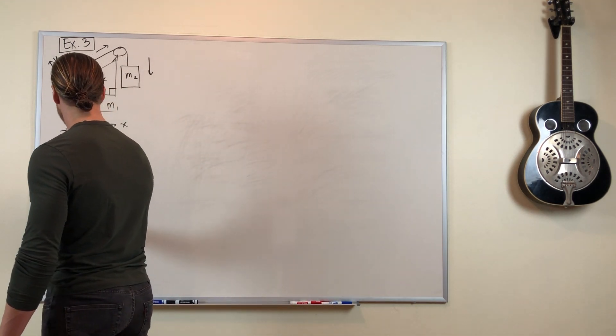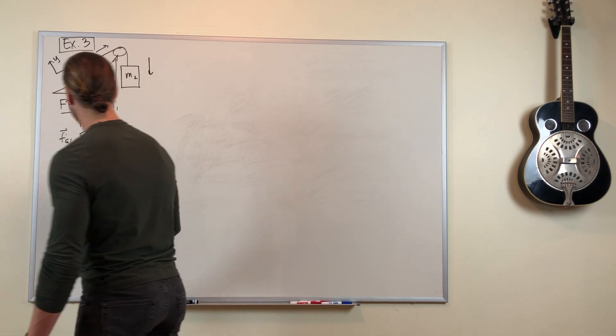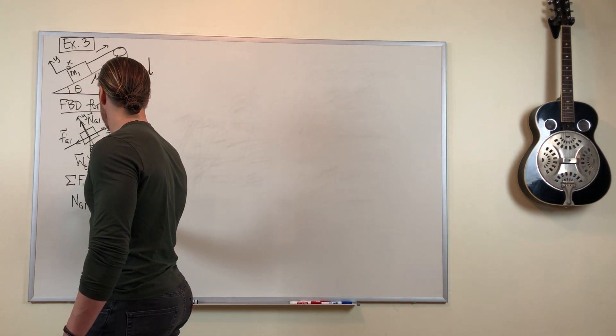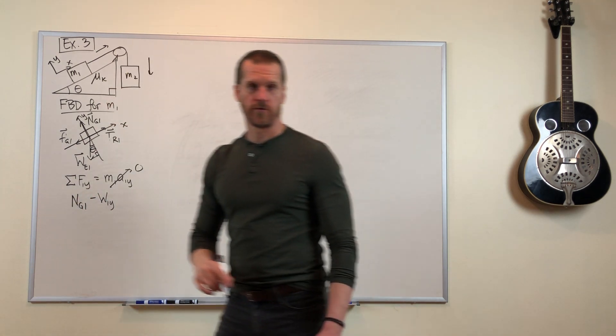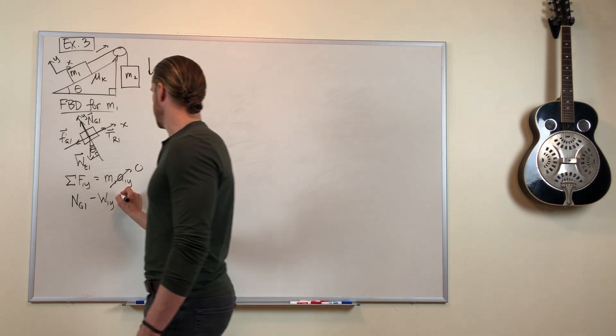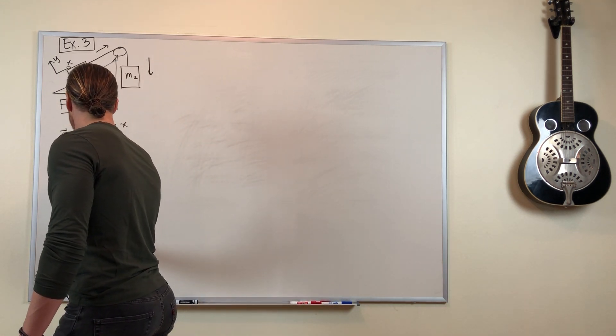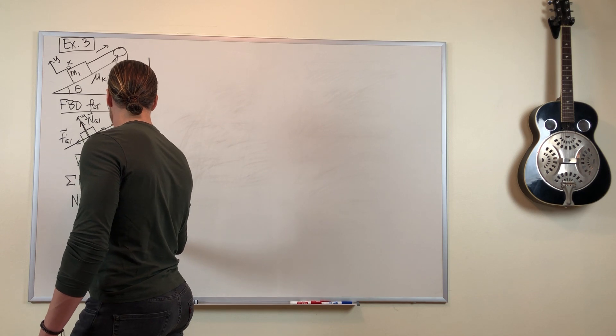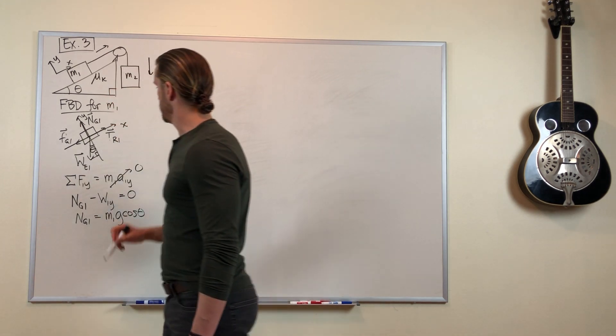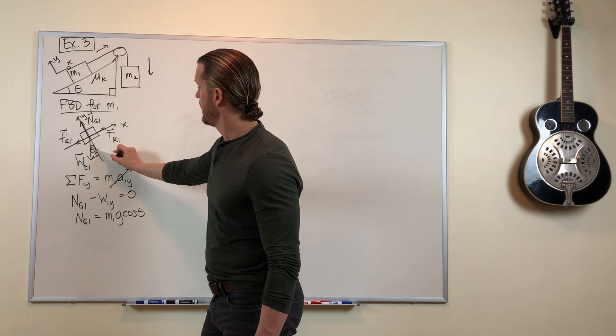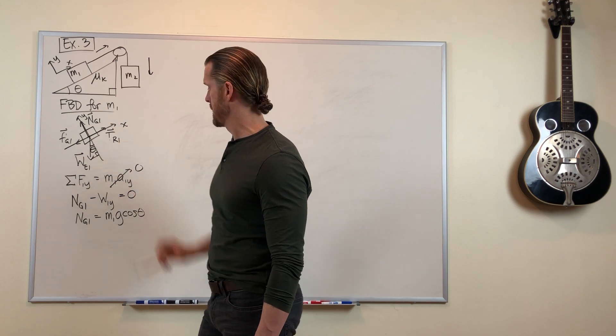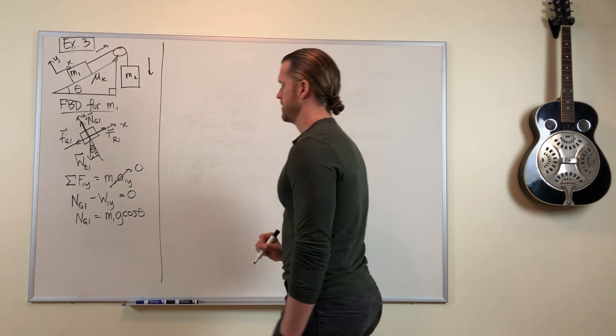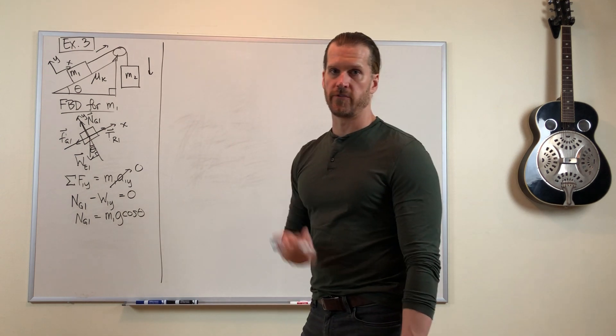But the left-hand side is not zero. It has two forces. It's got the normal force pointing in the positive y-direction and it has the y-component of gravity force in the negative y-direction. So that normal force equals m1g cosine theta. Again, if you look at this right triangle, the y-component is adjacent to the angle theta.